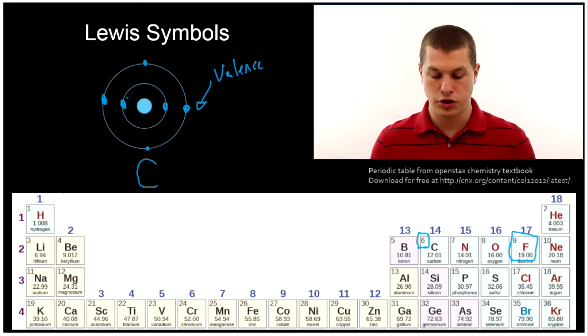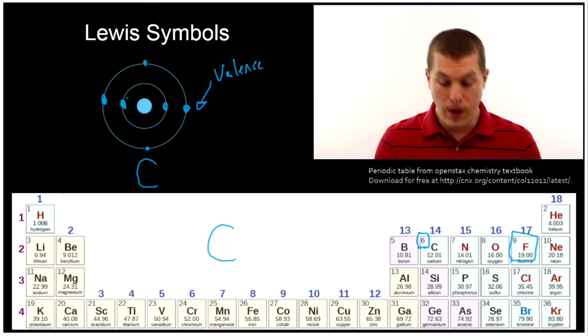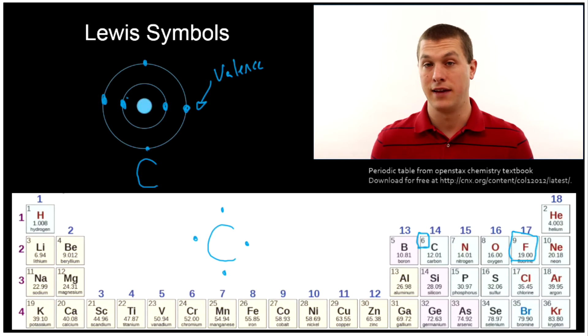So Lewis symbols are just a quick way to express how many valence electrons we have. So take carbon for example we know it has four valence electrons we just drew that up above and so the Lewis symbol will just have four dots around it and that's saying hey there's four valence electrons here and this is going to be really important when you go to build up to Lewis structures which show molecules with sticks and dots and letters as opposed to just an atom.